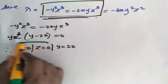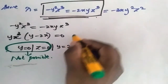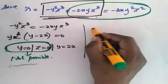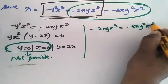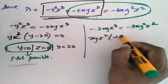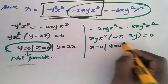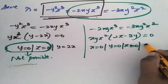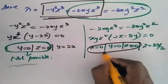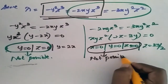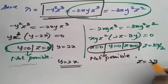Here Y equals 0 or Z equals 0 is not possible. Comparing the next pair: minus 2XYZ³ is equal to minus 3XY²Z², which gives Z equal to 3Y by 2. Y equals 0 or Z equals 0 is not possible. So Y equals 2X is possible and Z equals 3Y by 2 is possible.